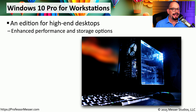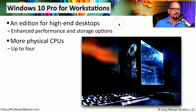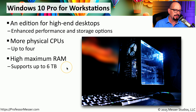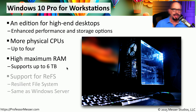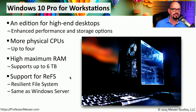Microsoft also made a high-end version called Windows 10 Pro for Workstations. If you're running a system with up to four separate physical CPUs, you can use Windows 10 Pro for Workstations. This version supports a maximum of 6 terabytes of RAM, and it supports the relatively new file system known as Microsoft Resilient File System, or ReFS — the same file system you'll find in Windows Server.